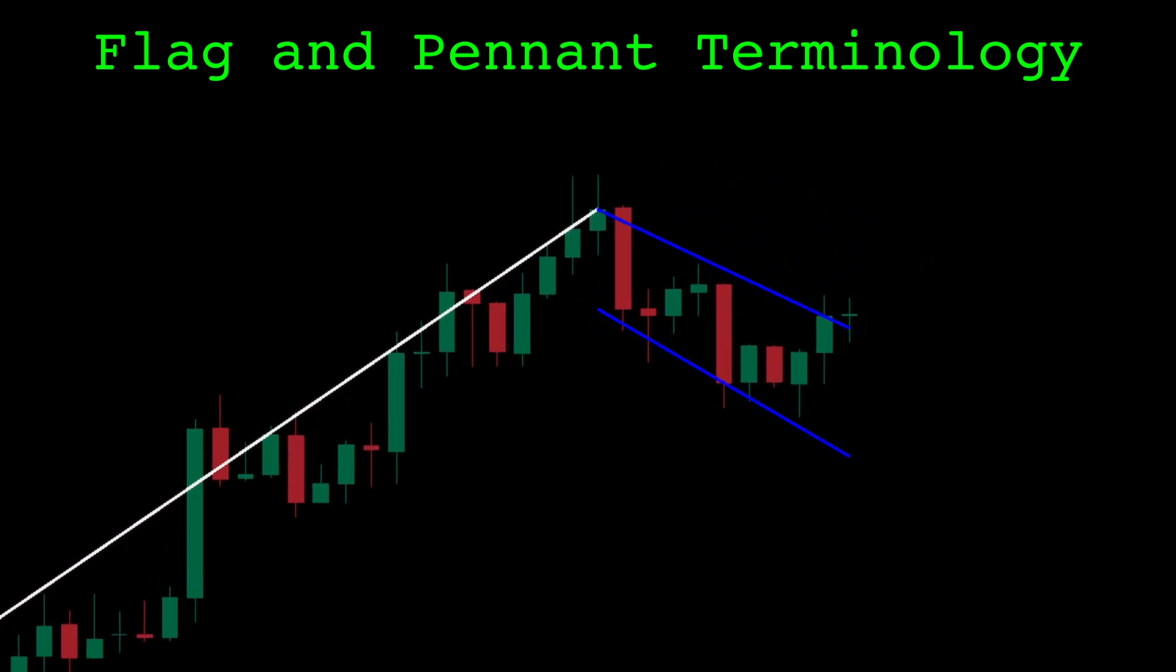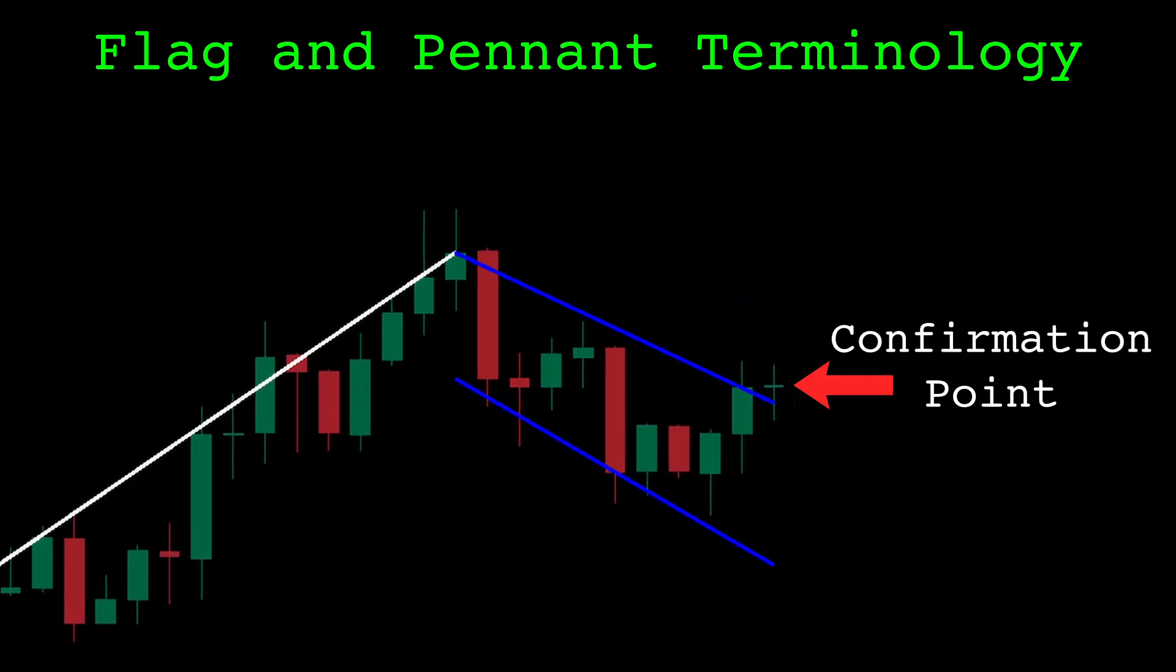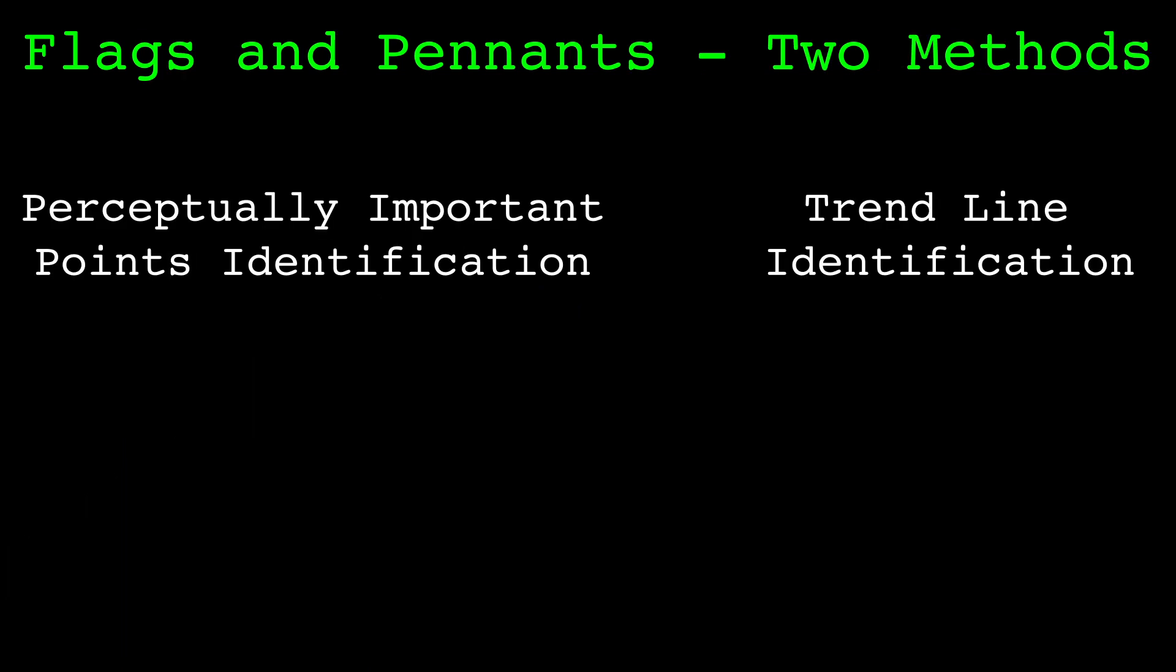The pattern is confirmed once the price breaks out of the range defined by the blue lines in the direction of the preceding trend. I'll call this the confirmation point. This is when a trade entry could take place. With that defined, let's get into the pattern recognition.